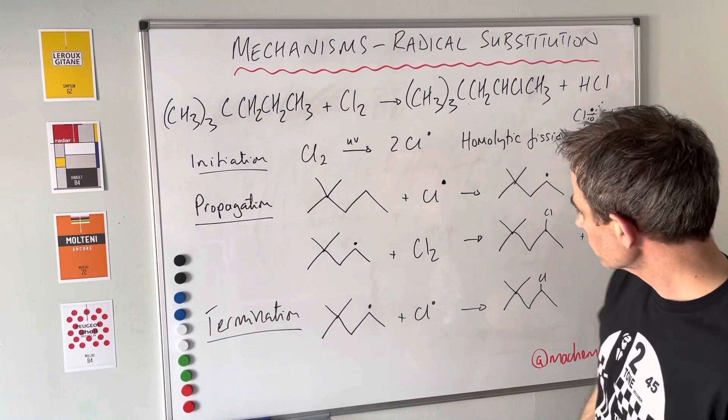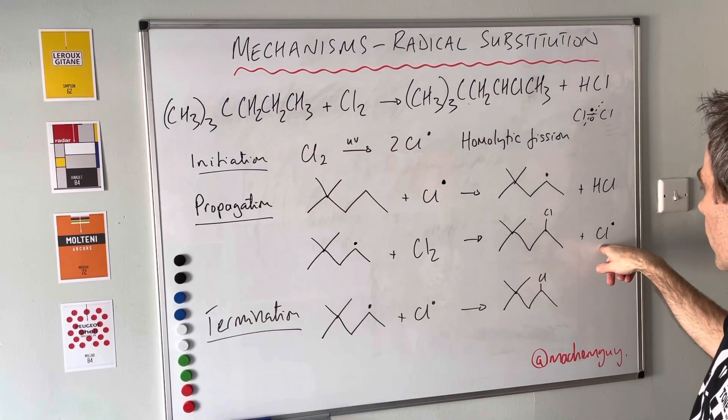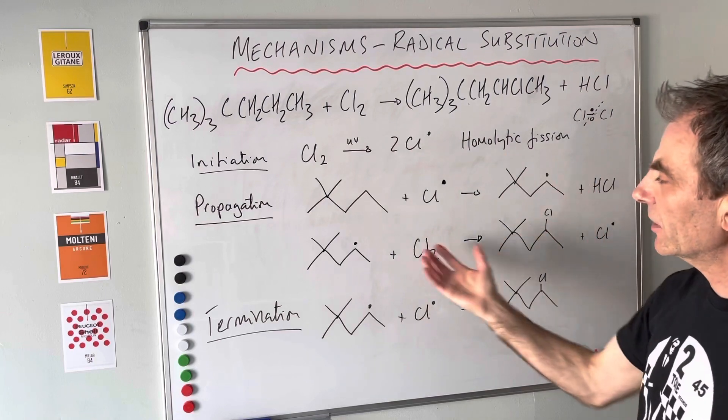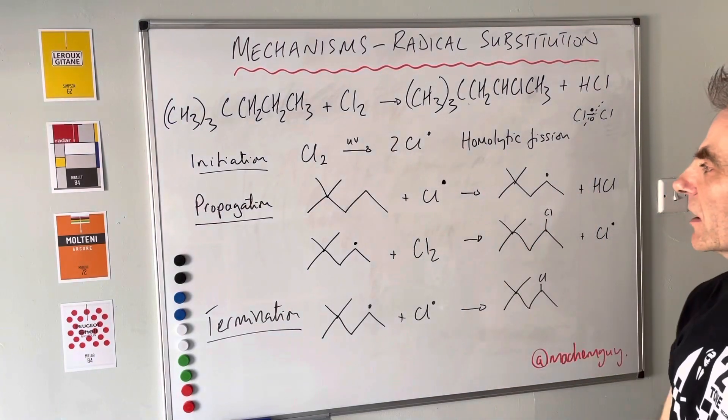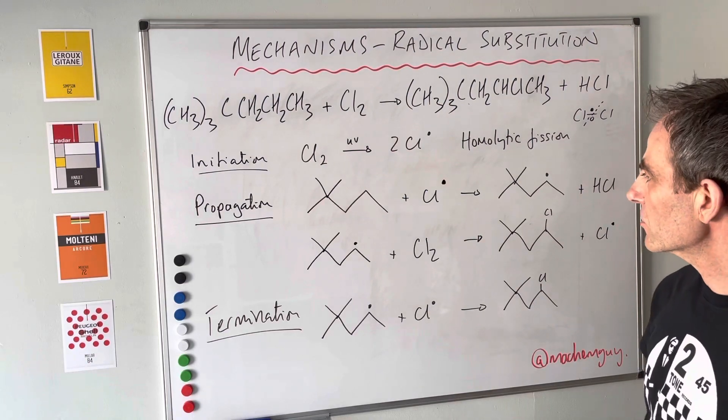The other thing is that the second propagation step generated another chlorine radical. There's nothing to stop this happening again via another pair of propagation steps, stripping out more hydrogens. That's called multiple substitution.